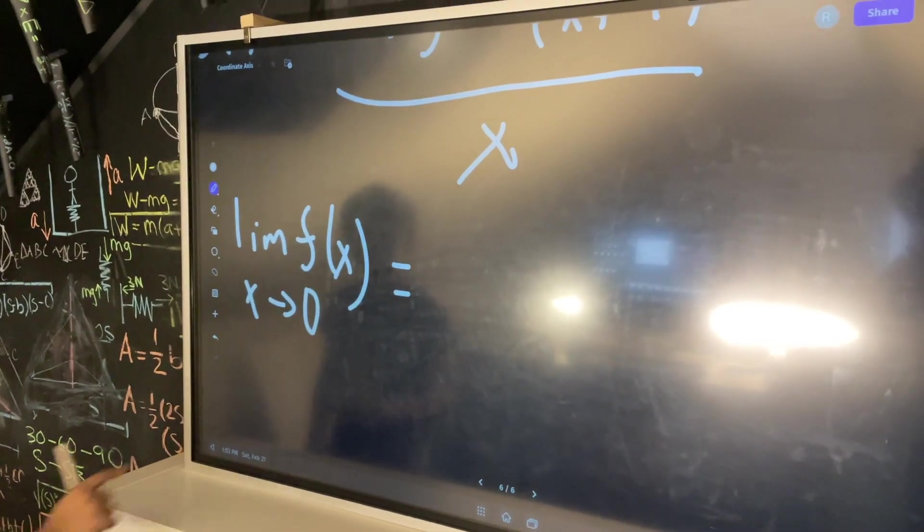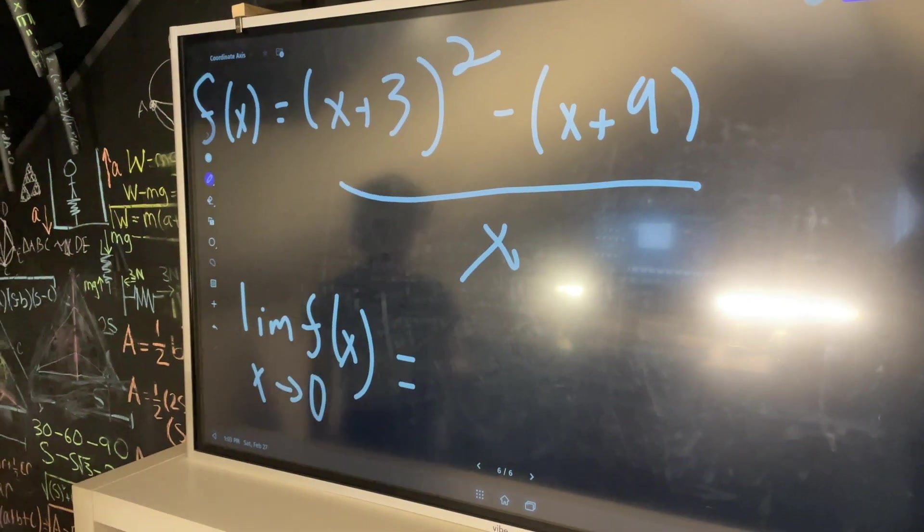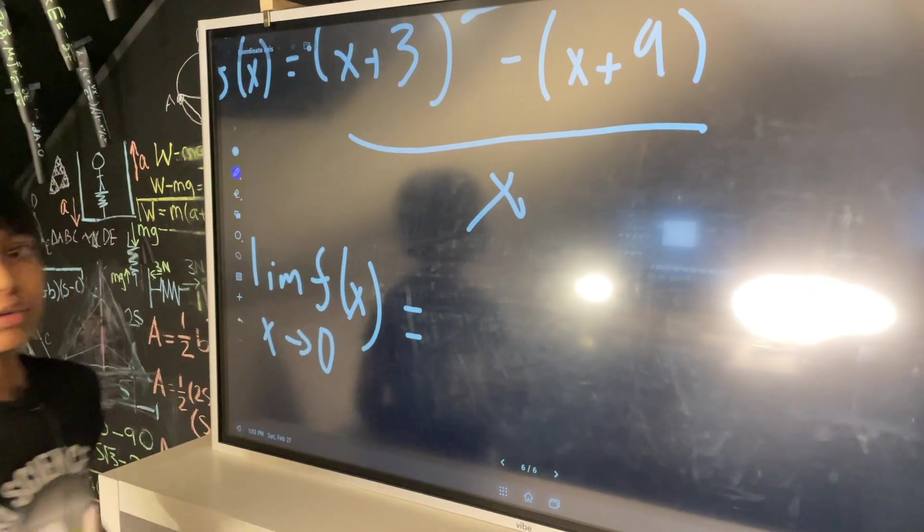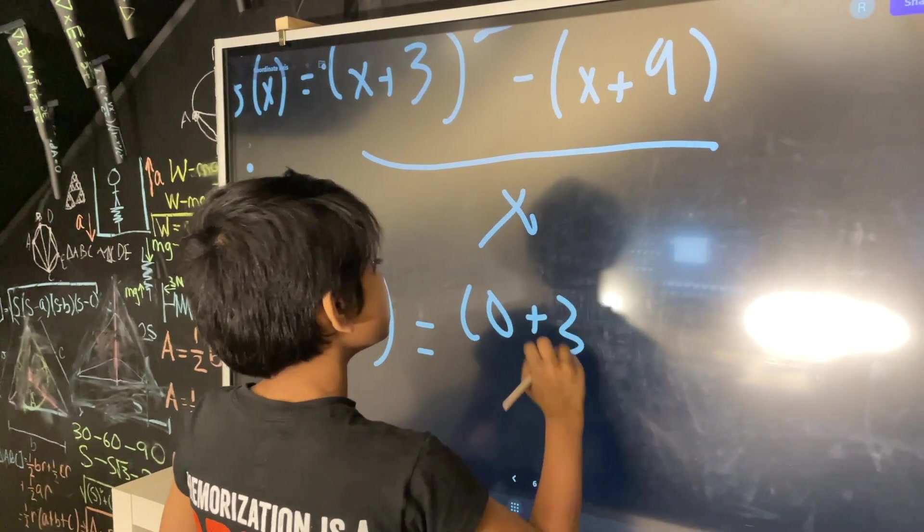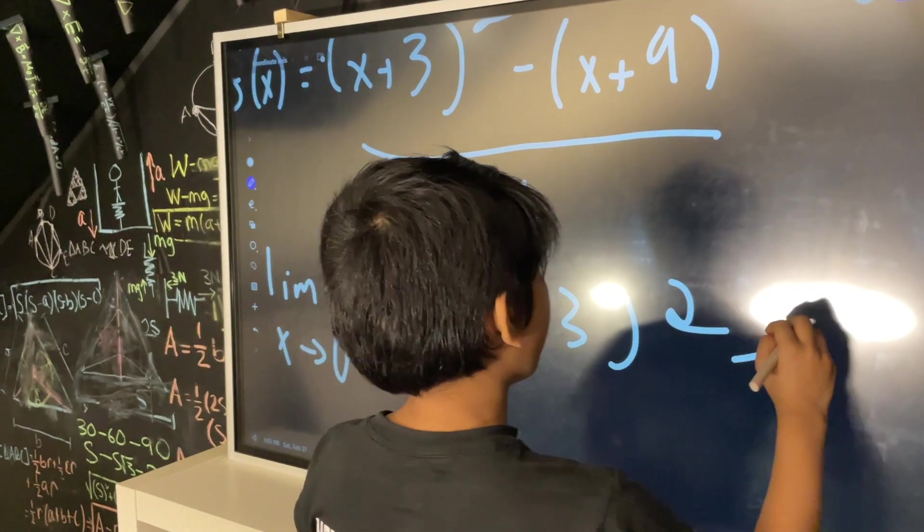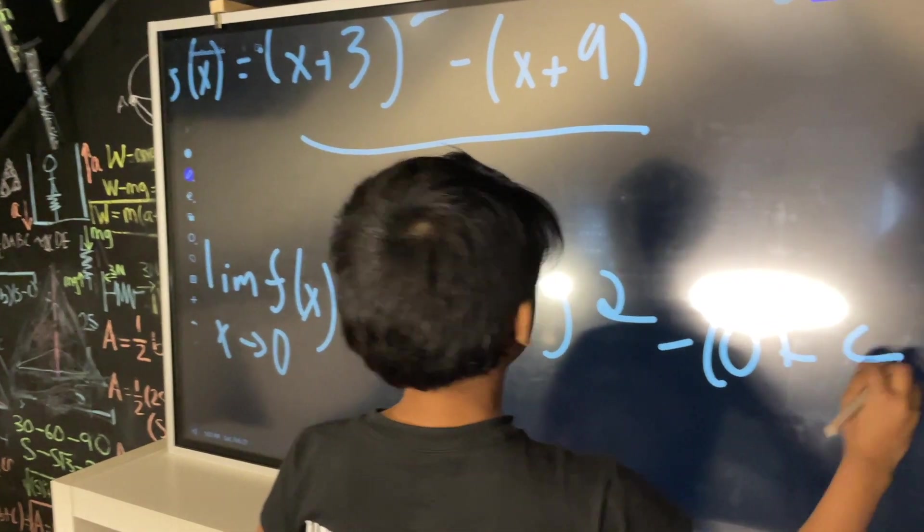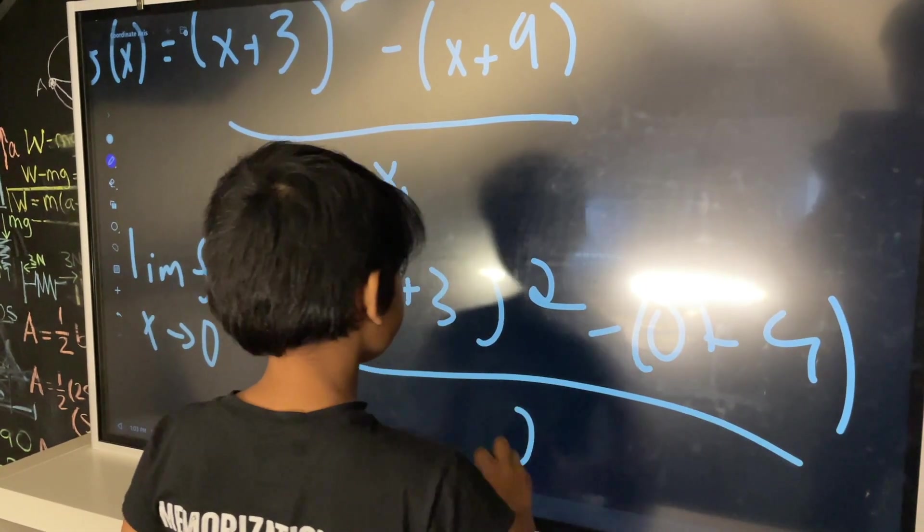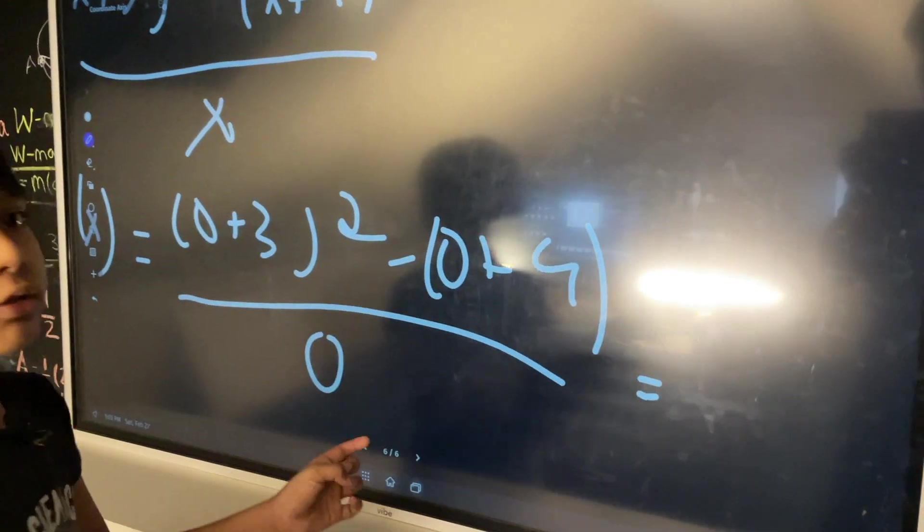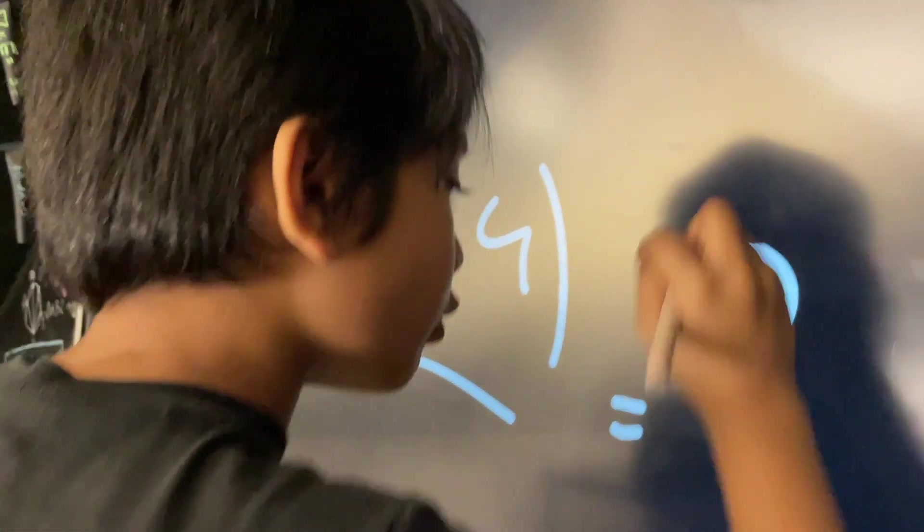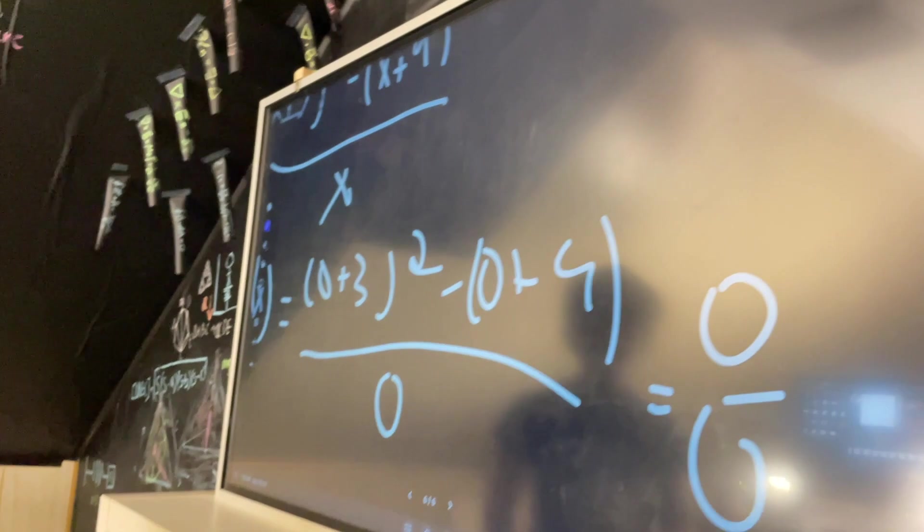And here's the thing. If you plug in the regular plug-and-chug strategy, that's going to give you 0 plus 3 whole squared minus 0 plus 9 over 0. Which just gets you to the old 3 squared minus 9 is 0 over 0. Very bad.